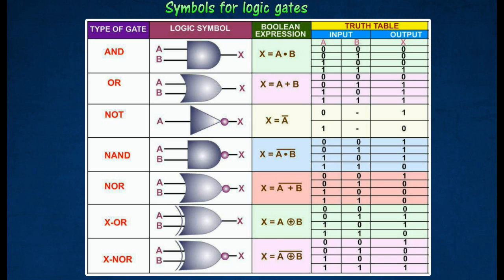Dot sign represents AND operation. Plus sign represents OR operation. Bar sign represents inversion operation. This sign represents exclusive OR operation.